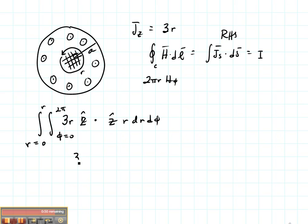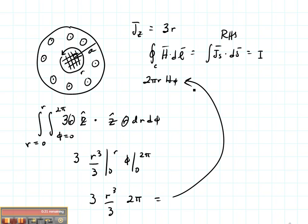So my integral is going to be 3, combine my Rs, R cubed over 3 from 0 to R and Phi from 0 to 2 Pi which is going to give me 3R cubed over 3 times 2 Pi. Then I will simply equate these two sides and that's going to let me solve for H Phi.